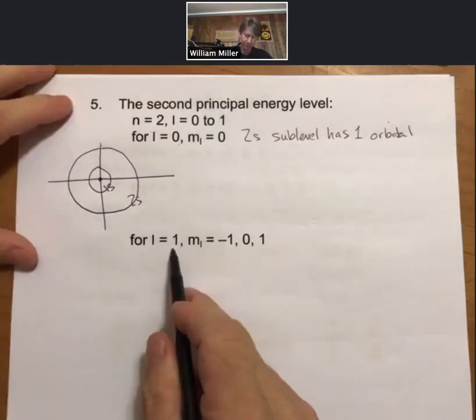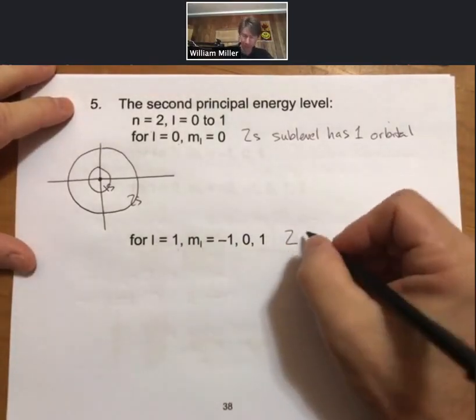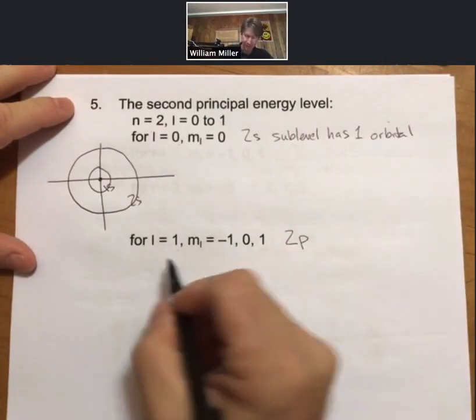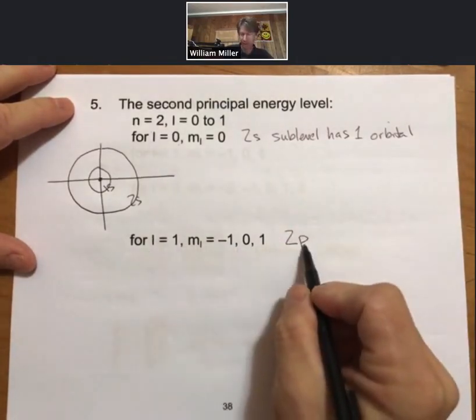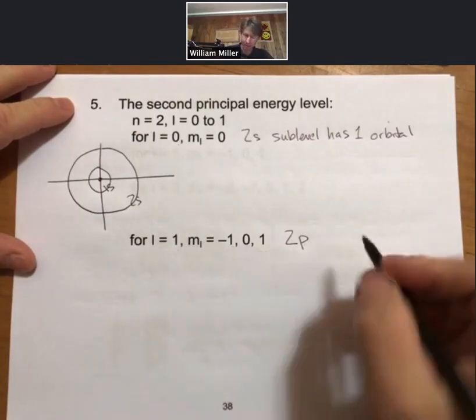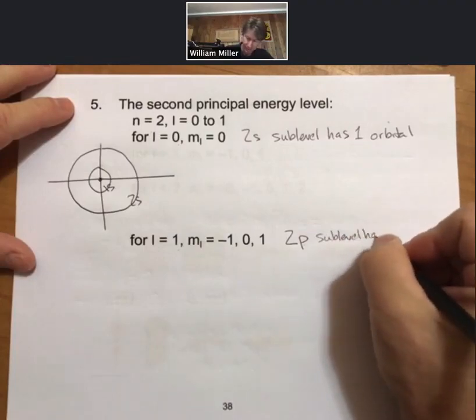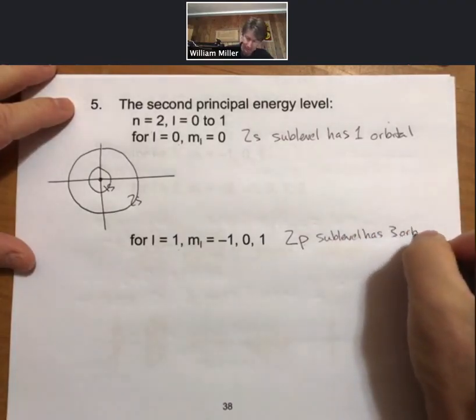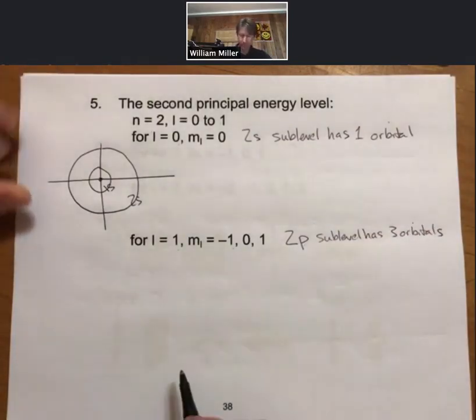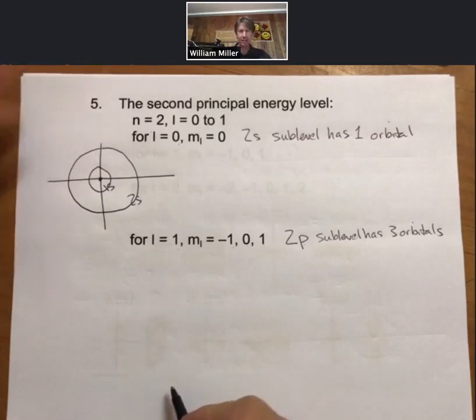But now let's talk about L equals one. For L equals one, we said that was, well, we're still in N equals two. Now we're in L equals one is for a P sublevel. And the 2P sublevel has one, two, three orbitals. And those three orbitals are generally designated as 2Px, 2Py, and 2Pz.